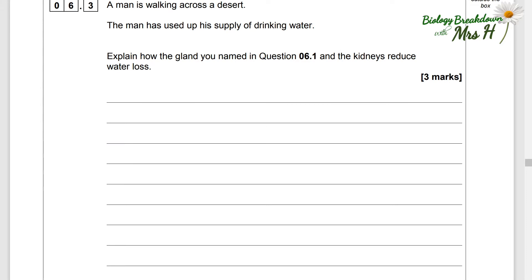A man is walking across a desert. The man has used up his supply of drinking water. Explain how the glands you named in question 6.1 and the kidneys reduce water loss.